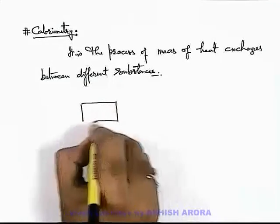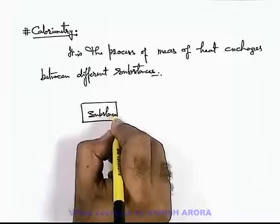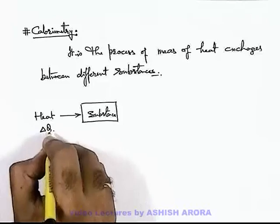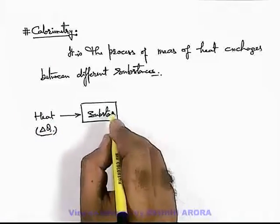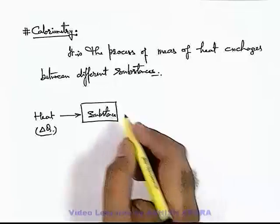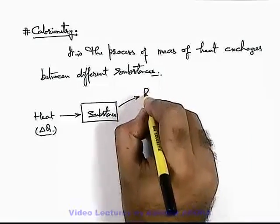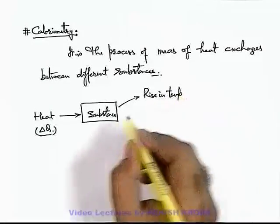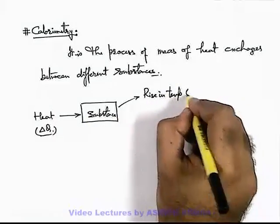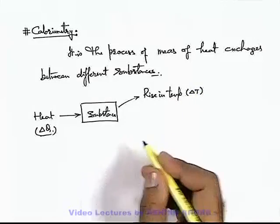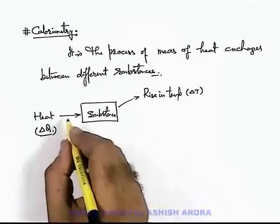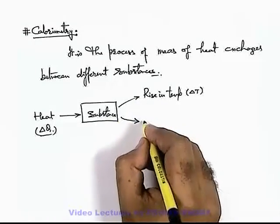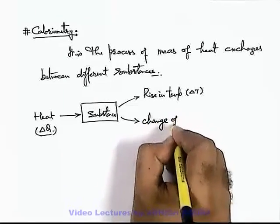If there is a substance and we supply heat to it — say an amount delta Q of heat is supplied — there are two phenomena which can take place. The first is a rise in temperature: if heat is supplied, the temperature of the substance may increase, say by delta T. Or it may also be possible that on supplying heat, its temperature won't increase but its phase will change — another phenomenon is change of phase.